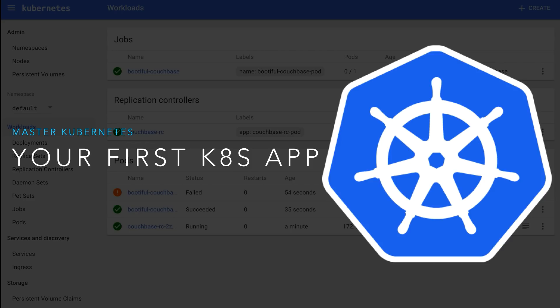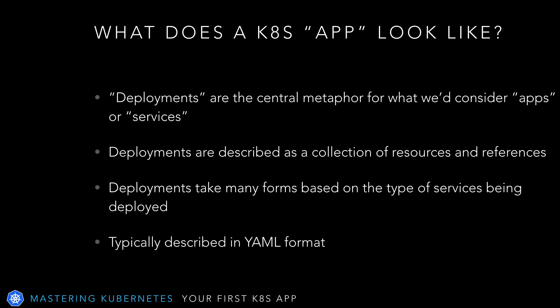We'll look at how deployments are described and how we can deploy them to Kubernetes. Deployments are the central metaphor for what we consider apps or services within Kubernetes. They're described as a collection of resources and references. Deployments tell Kubernetes what Docker containers are of interest, describe how they work together, what's required to keep them healthy, and what to do when they become unhealthy. Whatever form they take, they're usually described in a YAML format, and you can store this deployment in a file for replication across many Kubernetes systems.